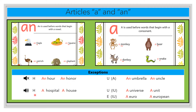When the letter h is pronounced — like hospital, house — you need to use the article a: a hospital, a house. Because now you pronounce the letter h like a consonant: house, hospital. A hospital, a house.